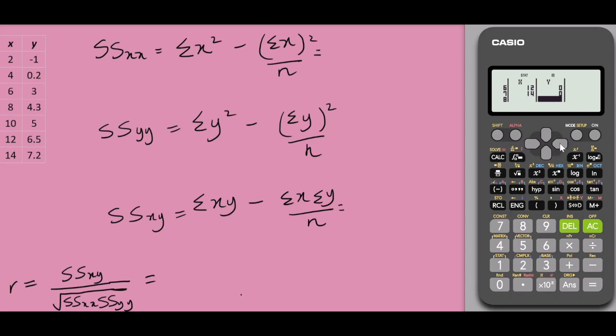Scroll over to my right hand side and to the top. Negative 1 equals to 0.2 equals to 3, 4.3, 5, 6.5, and finally 7.2. Ensure that you press the equal button over here and we could go to AC.